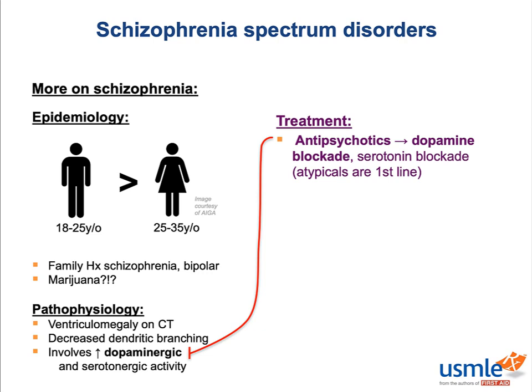We're going to talk a lot more about antipsychotics in the pharmaceutical section, but what you need to know now is that the first-line drugs for schizophrenia and the rest of the psychotic disorders are the atypical antipsychotics. Not because they treat negative symptoms better — because that's a myth that's been busted — it's just that they have a lower incidence of significant side effects.